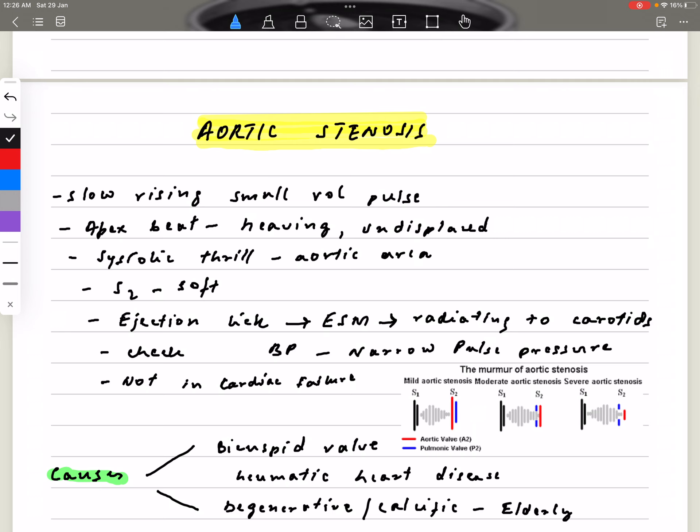Very important thing: once you appreciate the murmur is louder in the aortic area, you must auscultate the carotids, and most of the time the aortic stenosis murmur will radiate to the carotids.